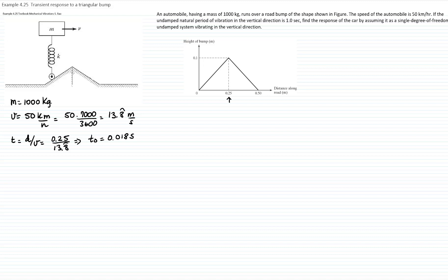So t₀ = 0.018 seconds for the first half of the bump, and 2t₀ = 0.036 seconds for the full bump traversal.